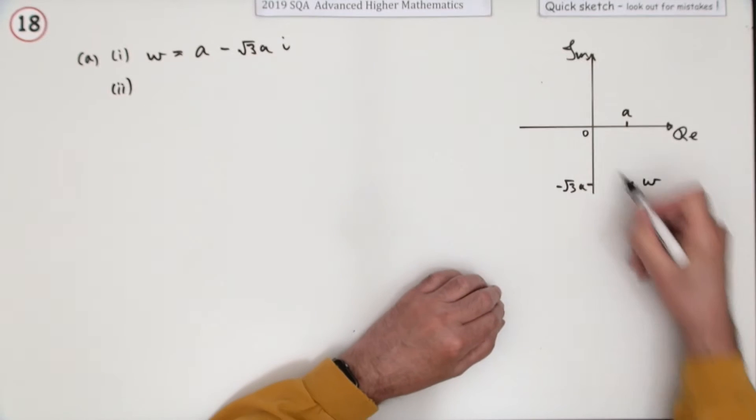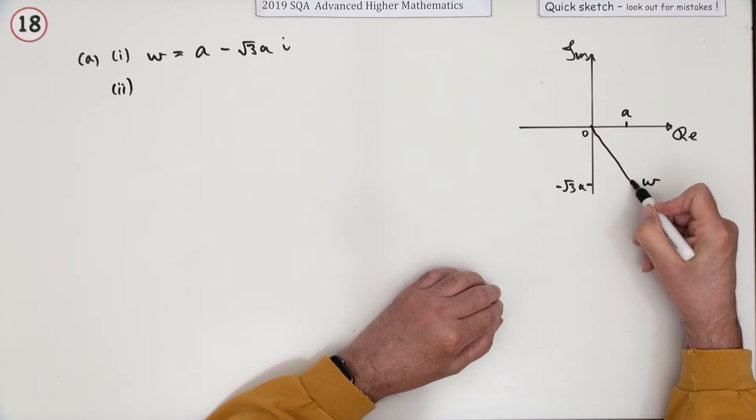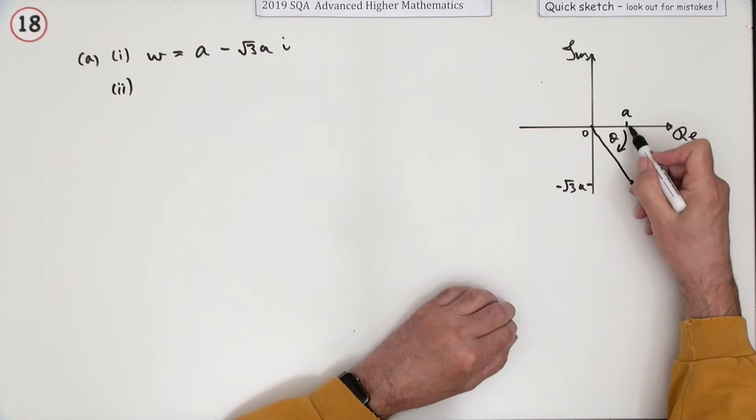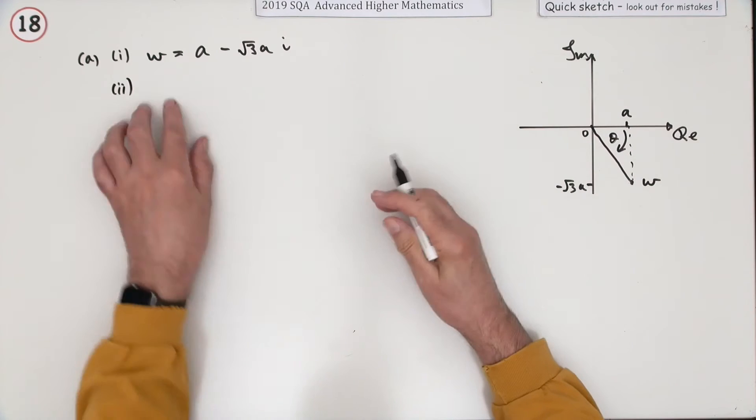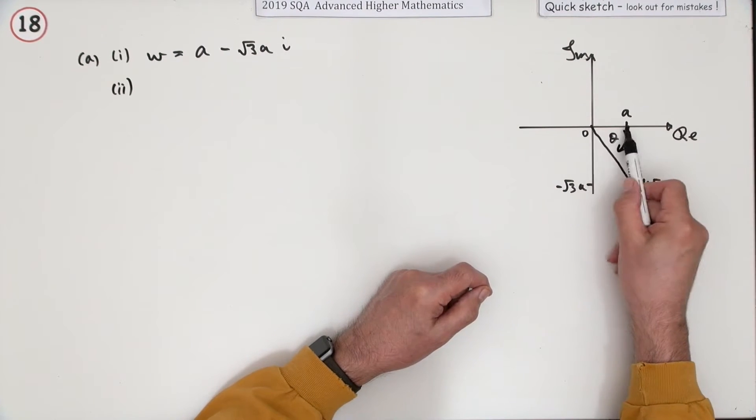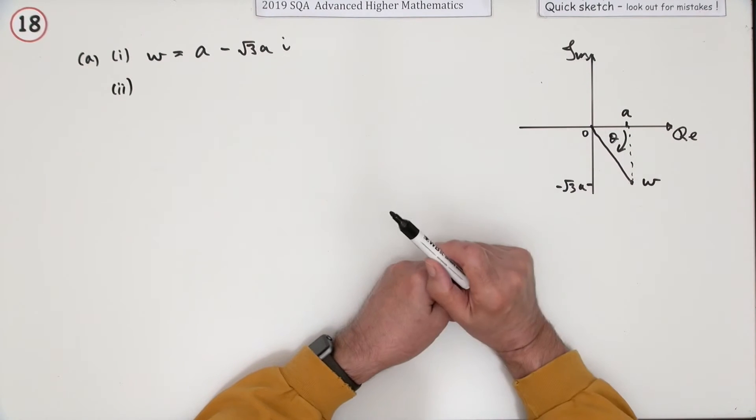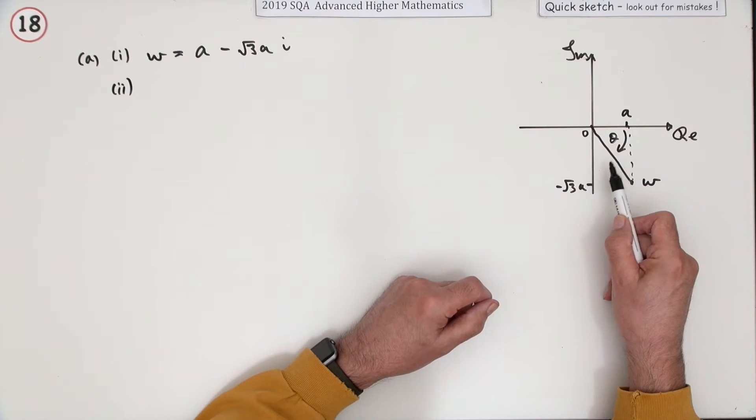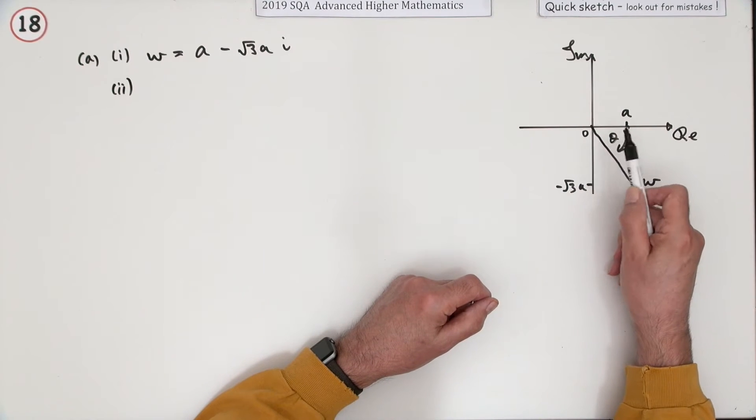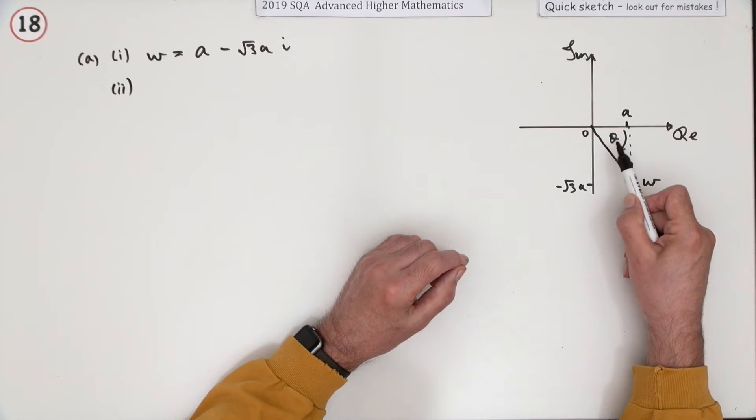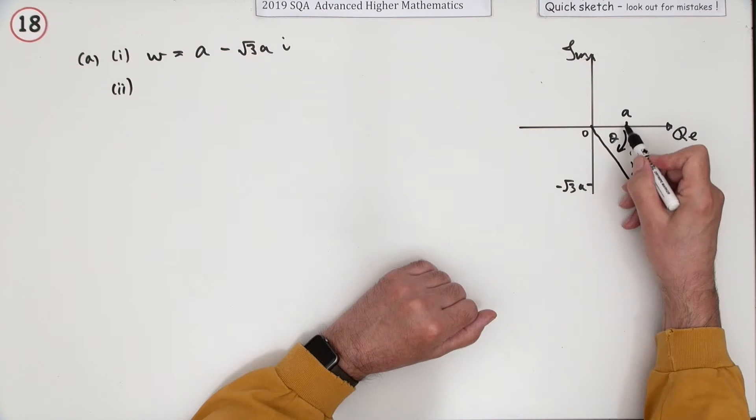Polar form - in that case you need the modulus and the angle. That just comes from simple trigonometry. In fact, in this case, I know there's going to be three marks for this, but you can read it straight off. That's a 1-2-root 3 triangle, so that length, that modulus is 2a, and you know that angle is 60 degrees.